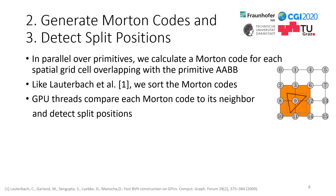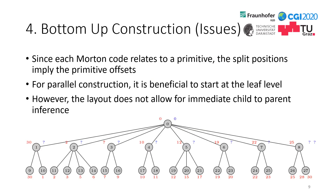The next two stages are similar to the original LBVH construction. Given the chosen grid resolution, we calculate the Morton code for each spatial grid cell overlapping with a primitive AABB, then sort those Morton codes using a parallel sorting algorithm. Whenever neighboring Morton codes differ, a spatial split has been found.